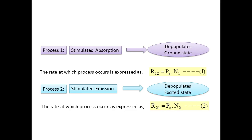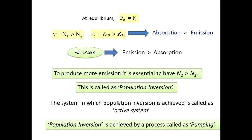Stimulated absorption depopulates the ground state; stimulated emission depopulates the excited state. At normal equilibrium, N1 is greater than N2, meaning absorption is greater than emission. But for laser action, we need N2 greater than N1 — emission must be greater than absorption. To produce more emission it is essential to have N2 greater than N1, and this is called population inversion. The system in which population inversion is achieved is called an active system.